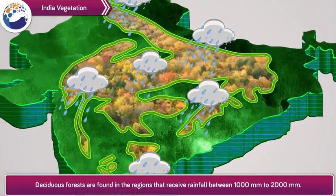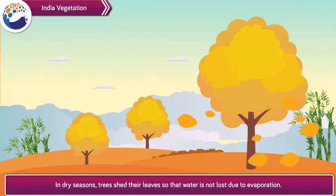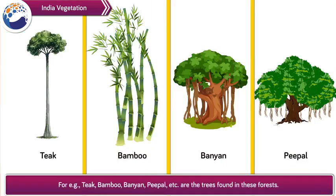Deciduous forests are found in the regions that receive rainfall between 1000 mm to 2000 mm. In dry seasons, trees shed their leaves so that water is not lost due to evaporation. For example, teak, bamboo, banyan, peepal, etc. are the trees found in these forests.